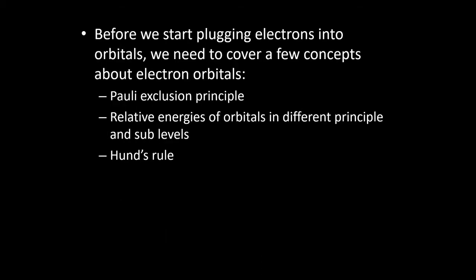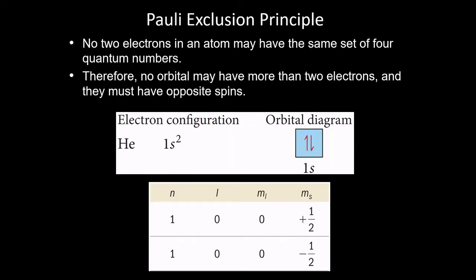Before we do examples, we have to talk about some rules for writing these configurations. The first rule we've already discussed: the Pauli exclusion principle. This tells us that no two electrons can sit in the same orbital with the same spin — you can't have all four quantum numbers be the same. Two electrons in the same orbital are fine as long as they are opposite in spin.